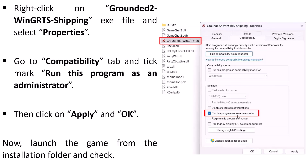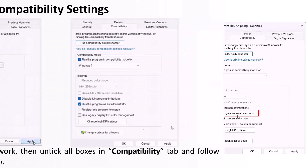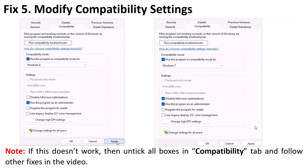Go to the Compatibility tab and tick mark 'Run this program as an administrator,' then click Apply and OK. Launch the game from the installation folder and check. If that doesn't work, also tick 'Run this program in compatibility mode for' and select Windows 8 from the dropdown, hit Apply and OK. If still not working, try Windows 7 instead.